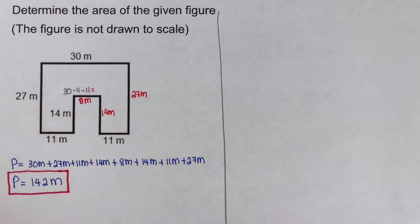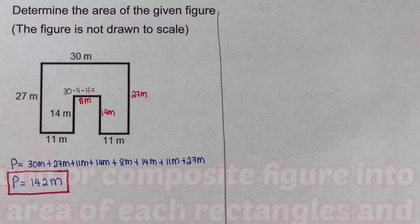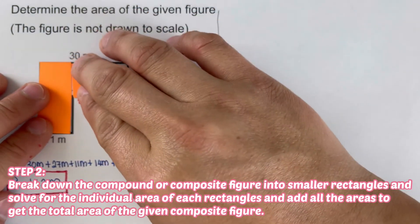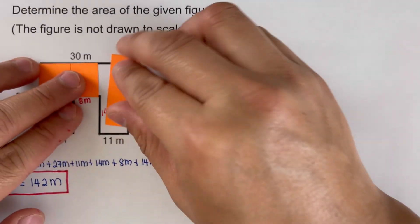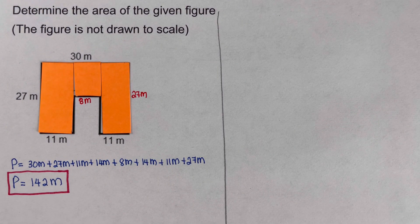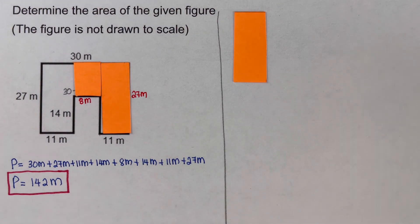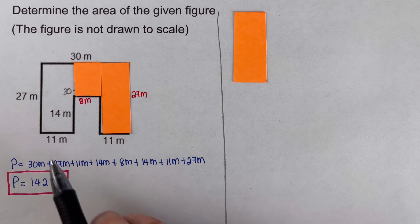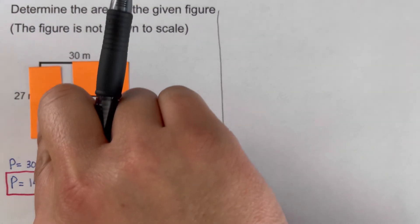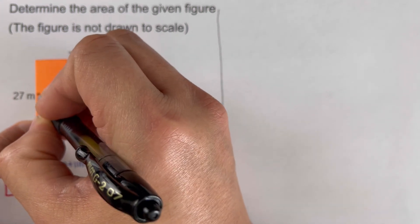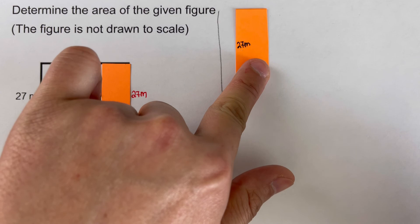Now we move on to determining the area. For step 2, we break the composite figure into rectangles and add the individual areas for the total. I cut it into three rectangles. For the first piece: this side is 11 meters since it comes from the original, and this side is 27 meters.